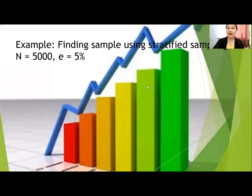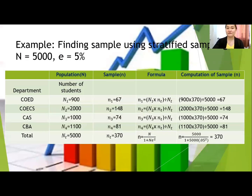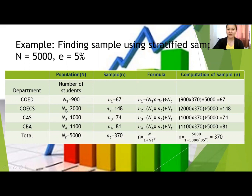For example, in a university you have a total population of 5,000 and you are using the standard five percent margin of error. There are four departments: College of Education with 900, College of Engineering and Computer Studies with 2,000, College of Arts and Sciences with 1,000, and College of Business and Administration with 1,100 — a total of 5,000.